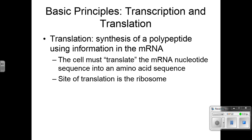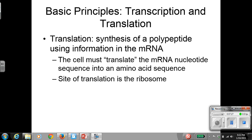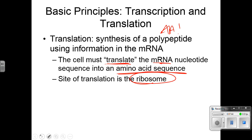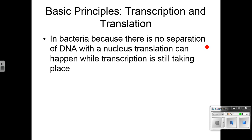Then we have translation — the second part. This is actually building the amino acid sequence. The cell must translate what's in the mRNA into amino acids, and this happens on the ribosome. In bacteria, because there's no separation of DNA with the nucleus, translation can happen while transcription is still taking place — they can do it at the same time because there's no nuclear membrane.